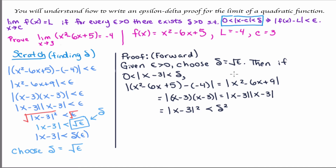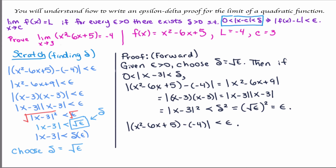Now let's substitute the square root of epsilon for delta. Simplifying this, we have epsilon. We began with the absolute value of f(x) minus l — we have all of these equalities — therefore, the absolute value of x squared minus 6x plus 5 minus negative 4 is equal to the absolute value of x minus 3 all squared. This happens to be less than epsilon. So that means our original absolute value expression is less than epsilon. Therefore, we've proven that the limit of x squared minus 6x plus 5 as x approaches 3 equals negative 4.